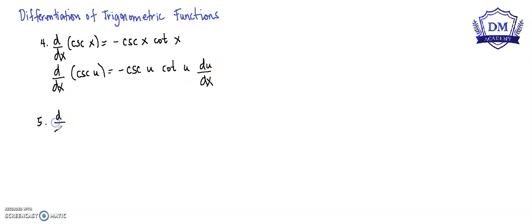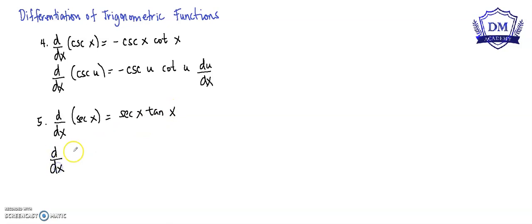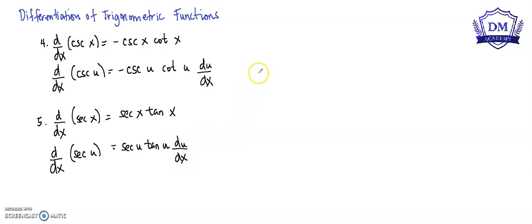We also have the derivative of secant x is equal to secant x tangent x. Or, using the chain rule, the d over dx of secant u is equal to secant u tangent u times d over dx.